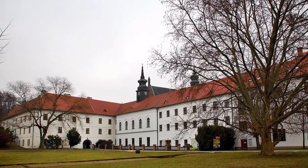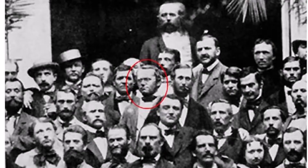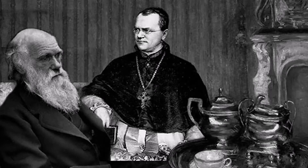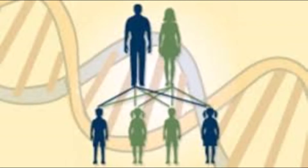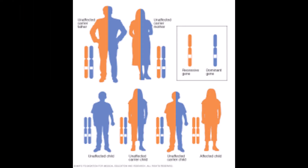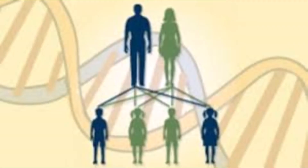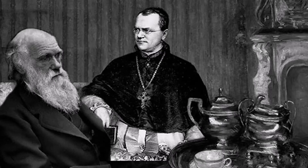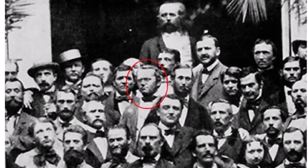In 1865, Gregor Mendel published his findings on the inheritance of seven different traits in the garden pea. Before Mendel's research, scientists thought inheritance occurred through a blending of each trait of the parents in the offspring. Mendel concluded instead that inheritance is particulate — that is, each parent contributes particles, or genetic units, to the offspring. We now call these particles genes.